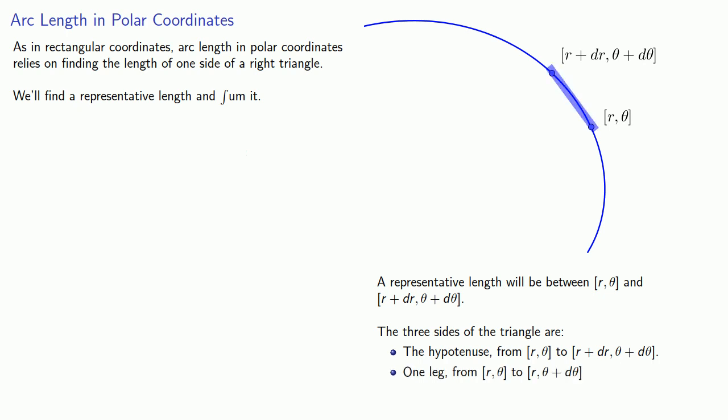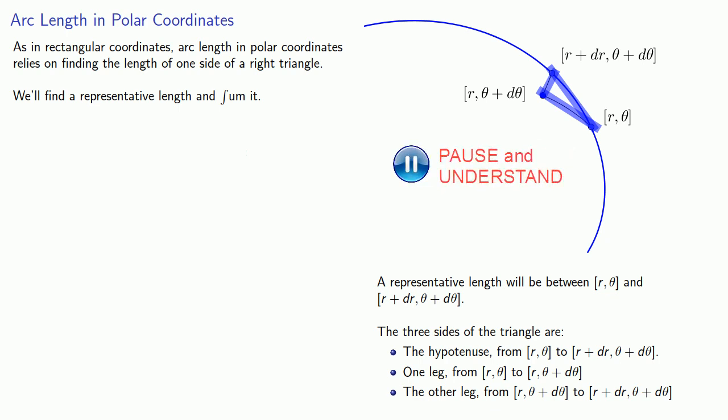One leg, which runs from [r, θ] to [r, θ + dθ]. And the other leg, which will run from [r, θ + dθ] to [r + dr, θ + dθ]. So we can apply the Pythagorean theorem. The square of the representative length is equal to the sum of the squares of the other two sides.